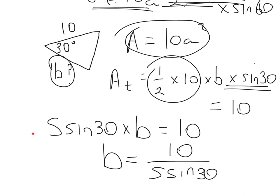Half of 10 is then 5. So I've put 5 times the sine 30 at the start times b is equal to 10. Change the subject of the formula to b. So how do you get rid of 5 times sine 30? Bring it down and divide. 10 divided by 5 sine 30. And that's 4 centimeters.